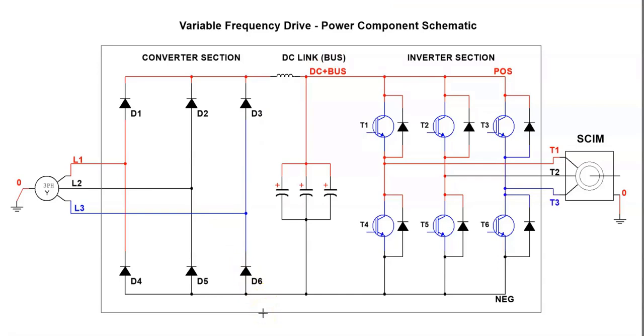Three main sections when you are talking about the power. You have the input section, which is known as the converter section. We supply the converter section with AC current, and it uses six diodes to convert it to DC current. I am going to explain how they work in the next video.